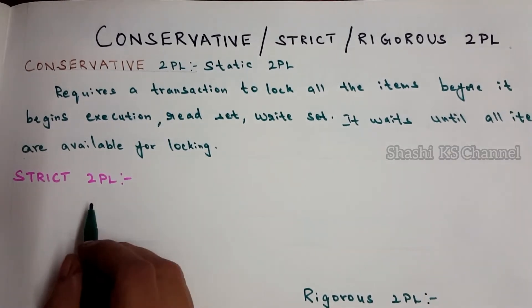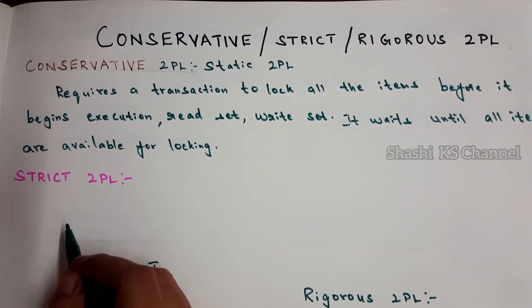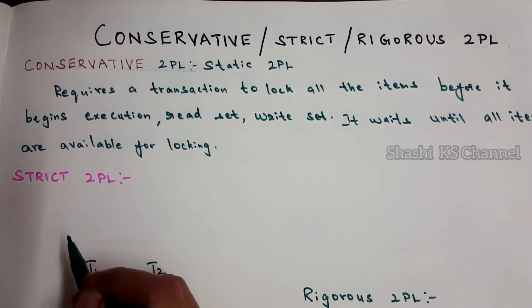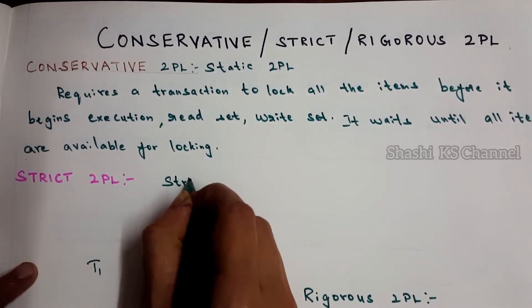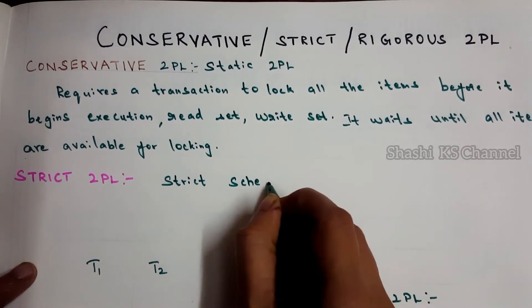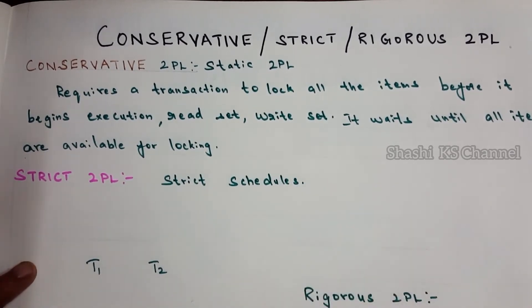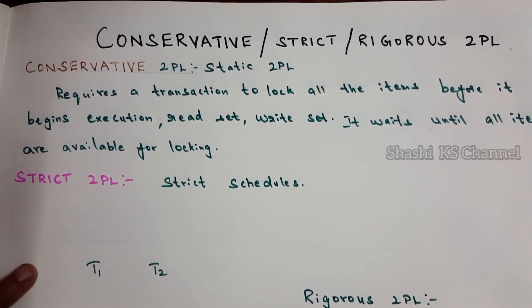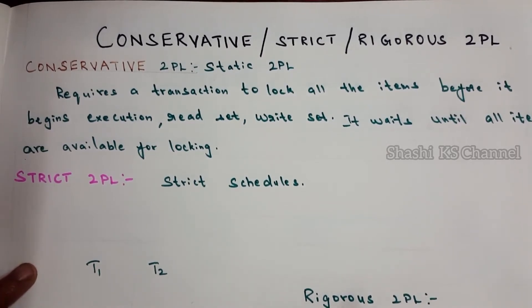The second protocol is called as strict two-phase locking protocol. This is the most widely used locking protocol, which actually guarantees strict schedules. A strict schedule means it is recoverable — it is possible for the transaction to recover from catastrophic failures — and it does not require cascading aborts, and actions of aborted transactions can be easily undone. Whenever you have a strict schedule, you have those advantages.